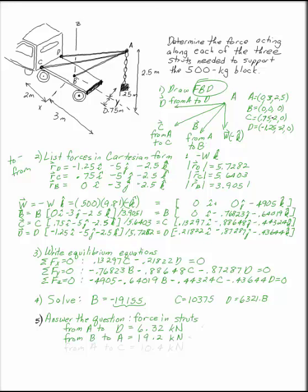So b has to act from b to a instead of the other way around. While d acts from a to d and is 6.32 kN, b is going to act from b to a instead of the other way around. And c acts from a to c and gives you 10.4 kN.